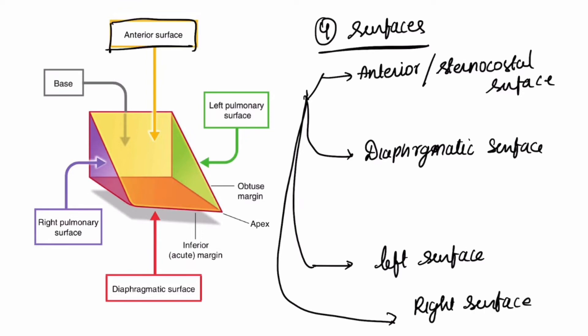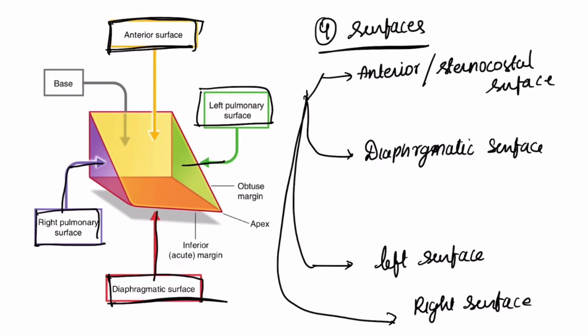In the diagram, the yellow one is the anterior or sternocostal surface, the green one is the left pulmonary surface, the violet one is the right pulmonary surface, and this is the diaphragmatic surface.